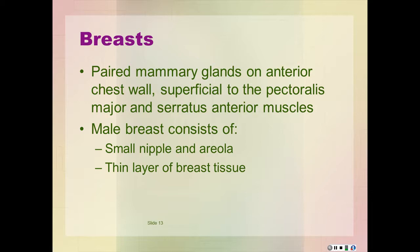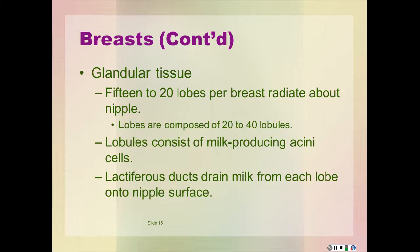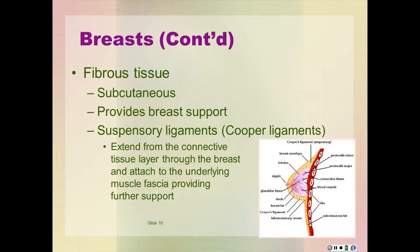The nipple is located centrally, surrounded by the areola, and the male breast consists of a small nipple and areola overlying a thin layer of breast tissue. The female breast is composed of glandular and fibrous tissue and subcutaneous and retromammary fat. The glandular tissue is arranged into 15 to 20 lobes per breast that radiate about the nipple. Each lobe is composed of 20 to 40 lobules consisting of milk-producing acini cells that empty into lactiferous ducts. The layer of subcutaneous fibrous tissue provides support for the breast. Suspensory ligaments, known as Cooper ligaments, extend from the connective tissue layer through the breast and attach to the underlying fascia, providing further support.